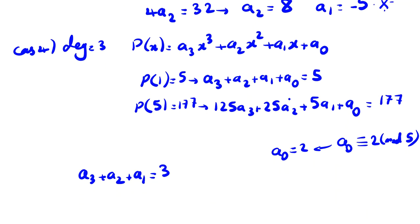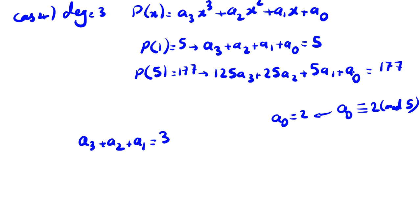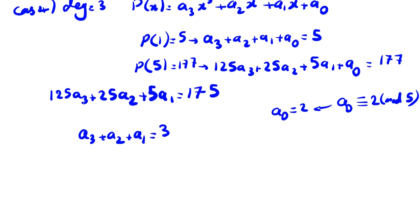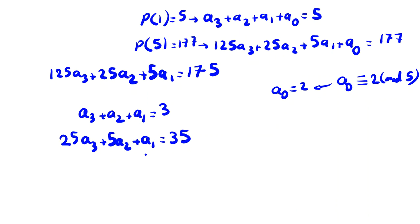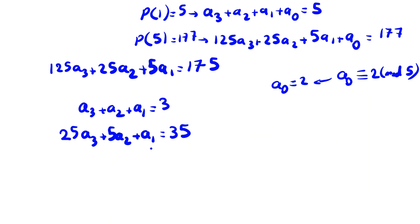Substituting a_0 = 2 into the two equations: a_3 + a_2 + a_1 = 3, and 125a_3 + 25a_2 + 5a_1 = 175. Dividing the second by 5: 25a_3 + 5a_2 + a_1 = 35. Taking this equation mod 5, we find a_1 ≡ 0 (mod 5), so a_1 is a multiple of 5.